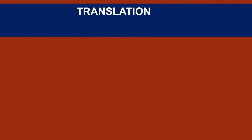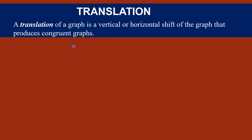Next, we are going to see translation. A translation of a graph is a vertical or horizontal shift of the graph that produces a congruent graph — meaning the shape is preserved, just shifted. There is a vertical shift type and a horizontal shift type.